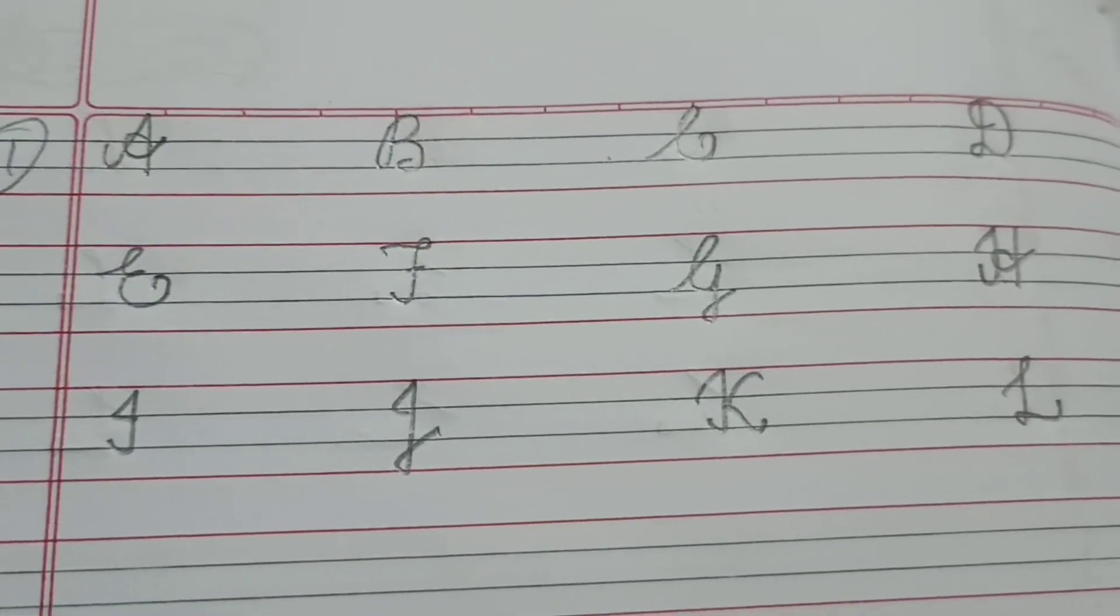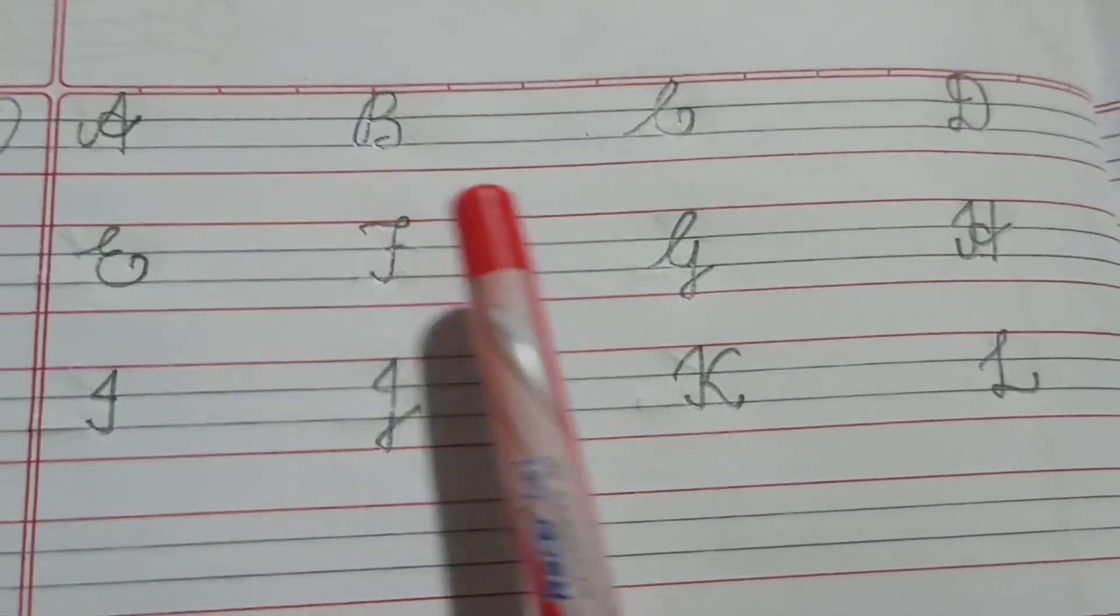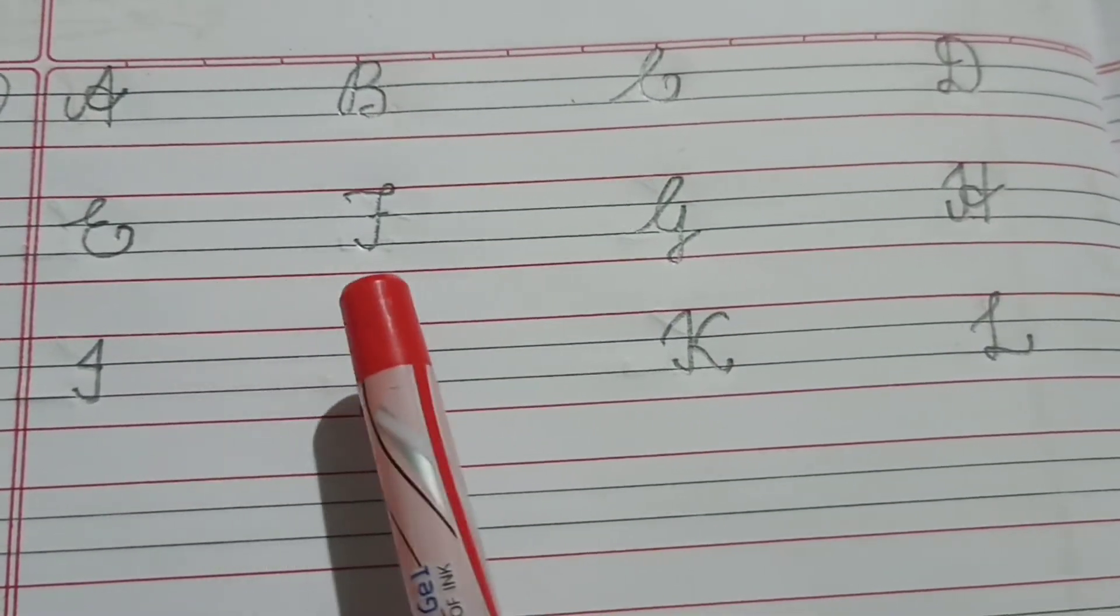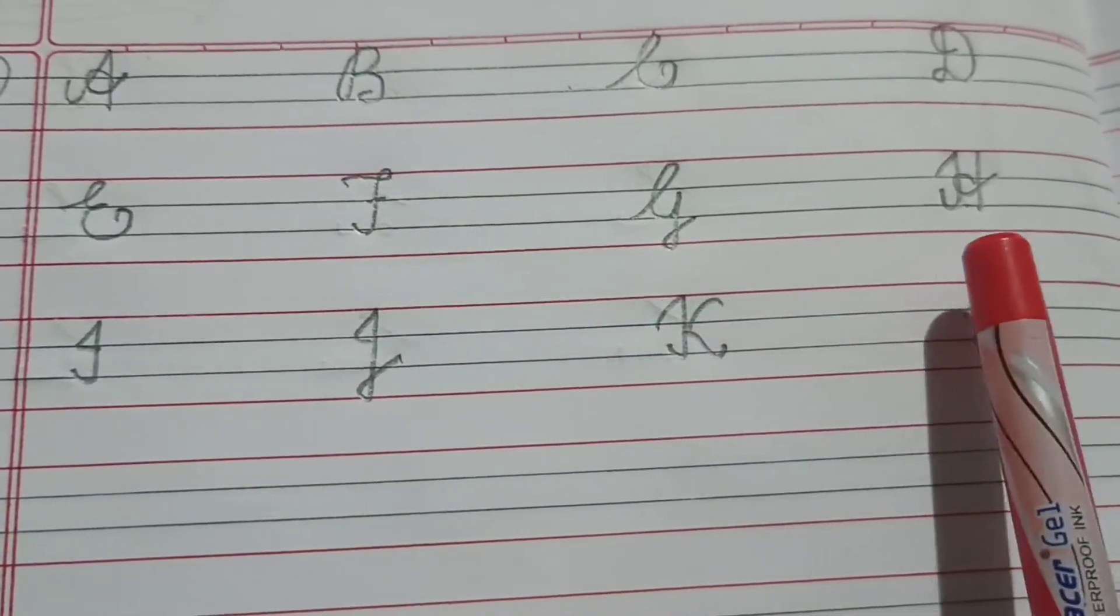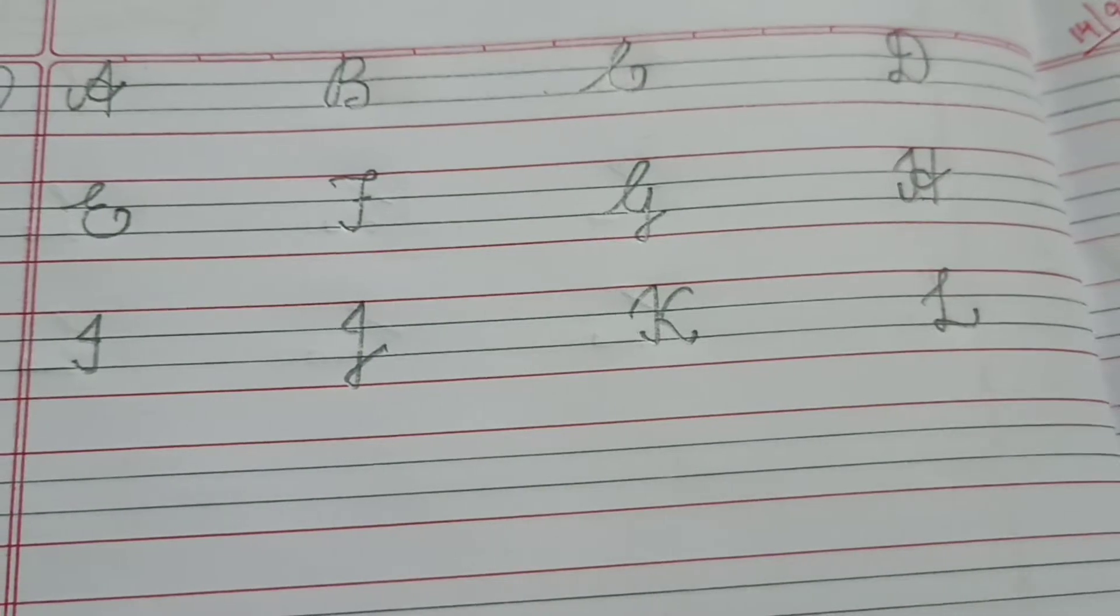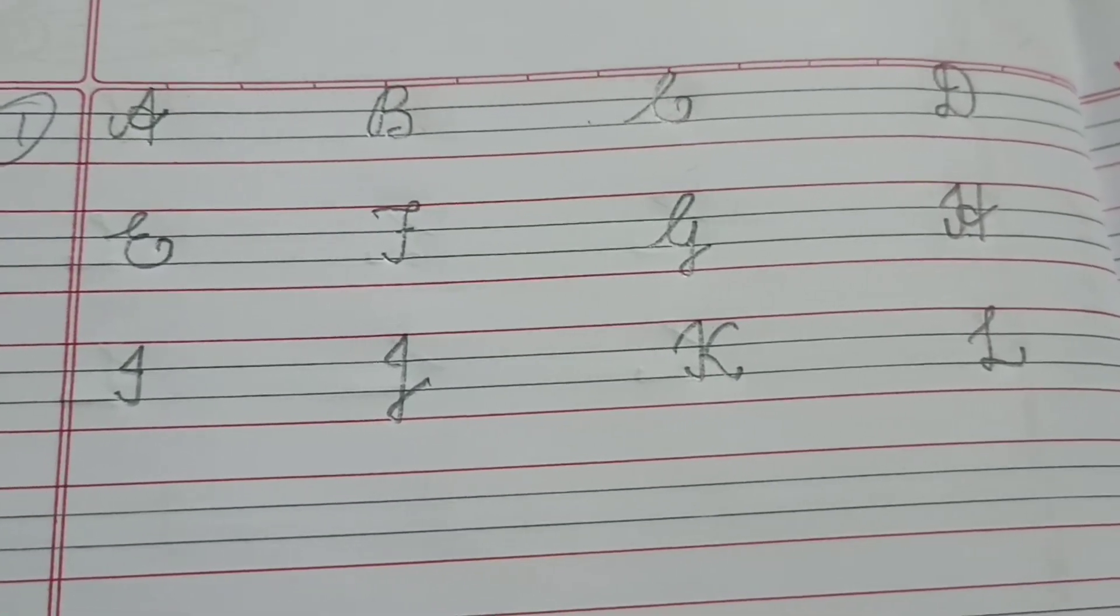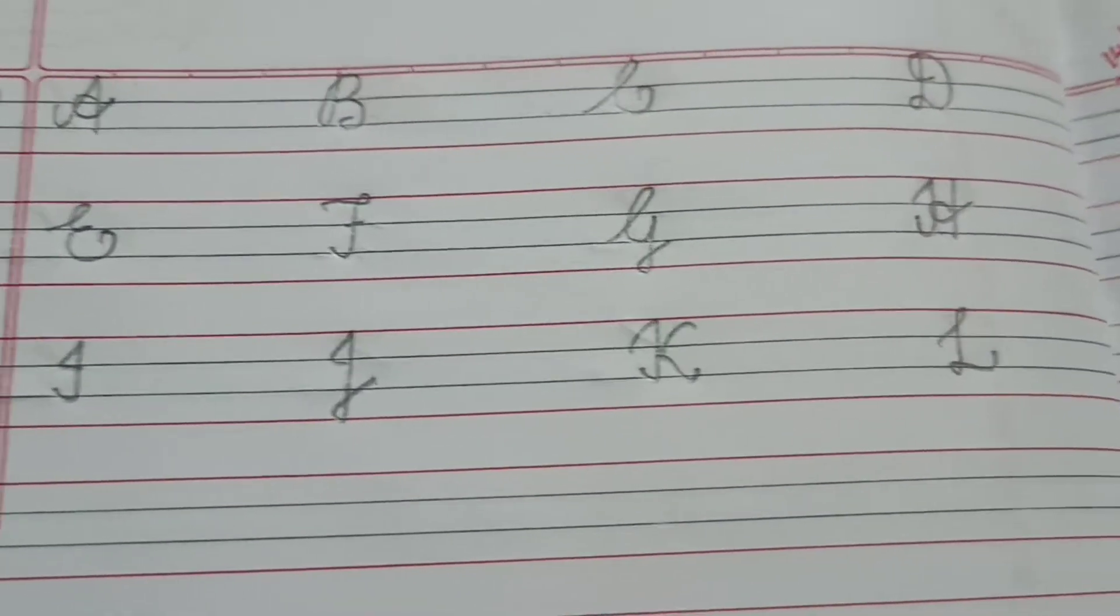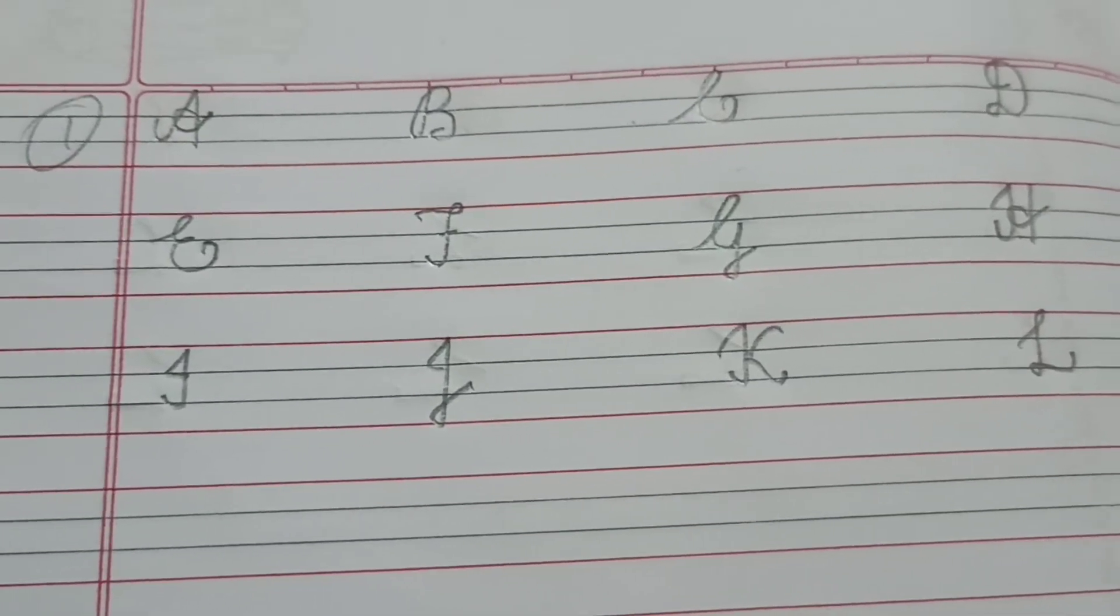You can see so beautiful these alphabets look. Yes. So, see here. A, B, C, D, E, F, G, H, I, J, K, L. Isn't it beautiful children? Okay. You also write it the same way how I have taught you.